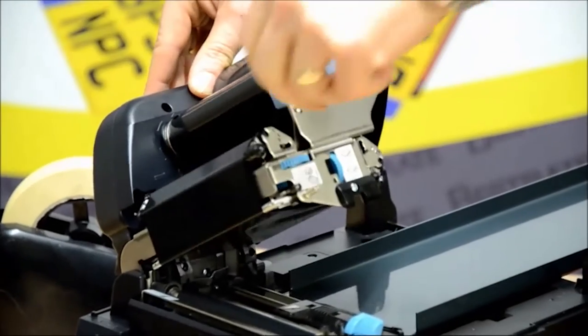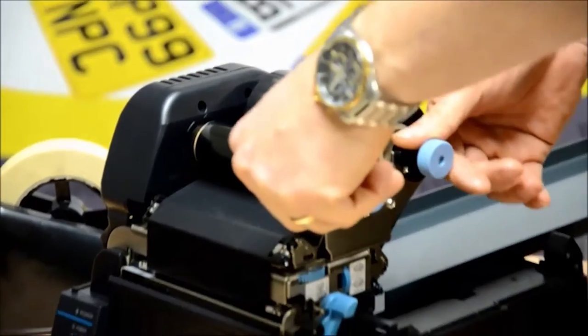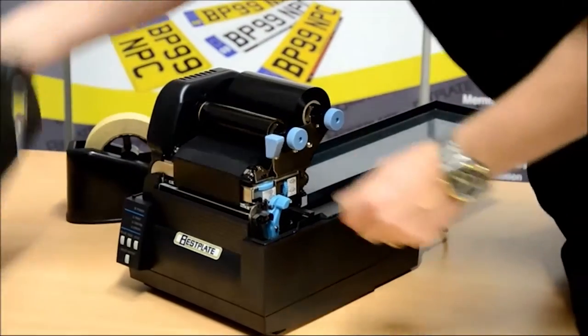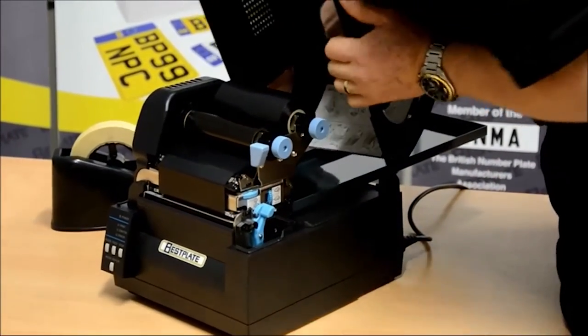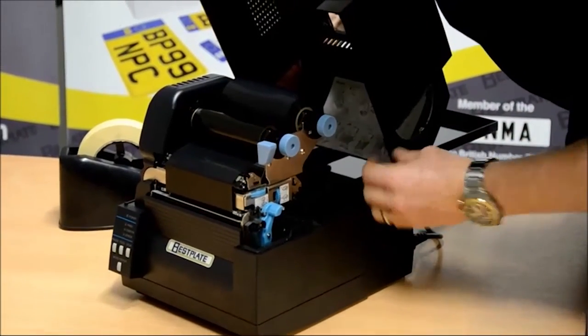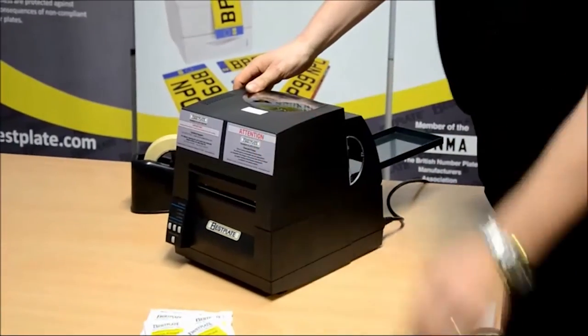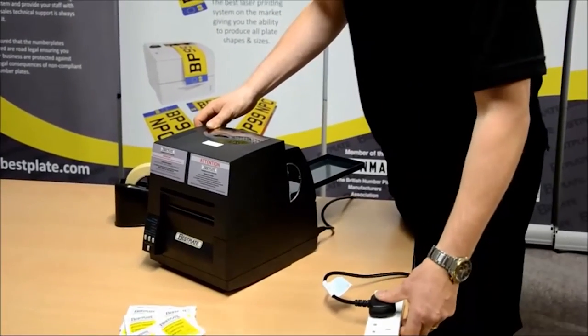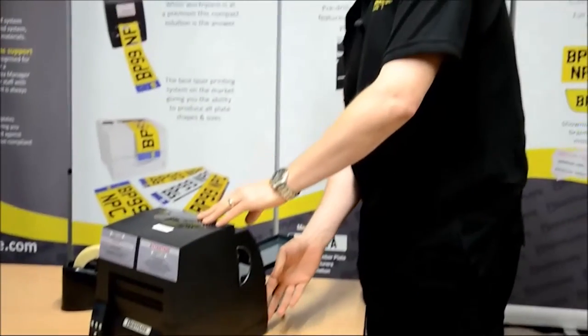Then using the blue push button at the top, push the carriage back down so it clicks into place. Then take the lid, put the lid back onto the printer. Take the plug and put it back into the power source, and turn the printer on. And that's how you change the ribbon on a CLP621.